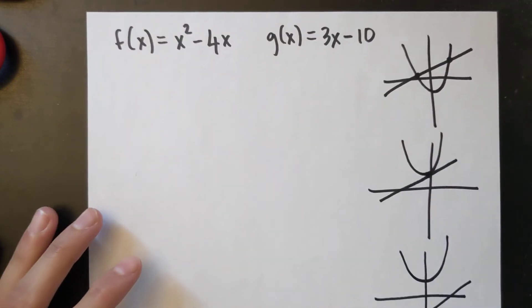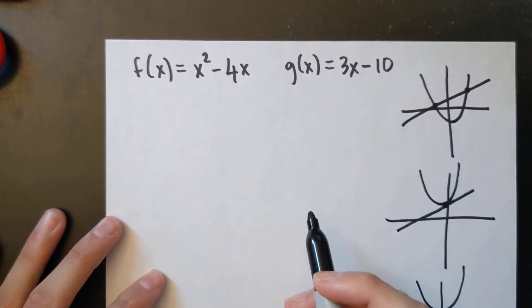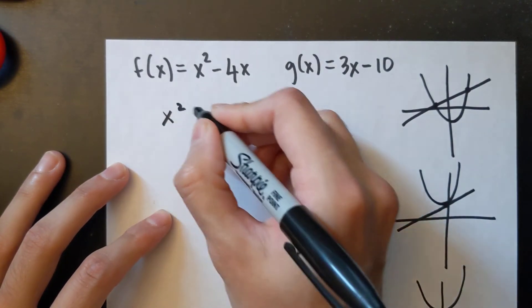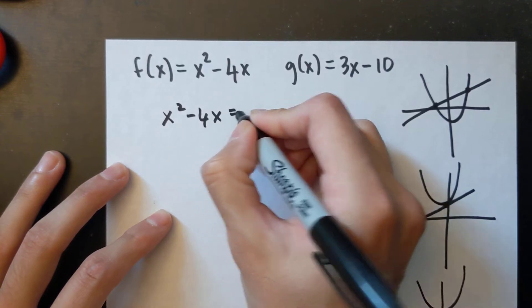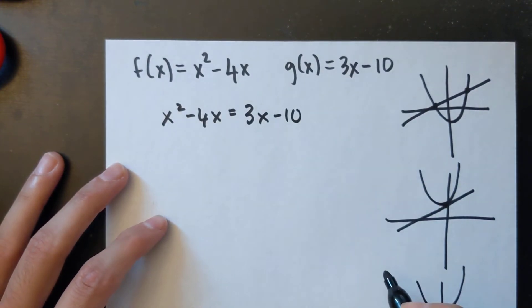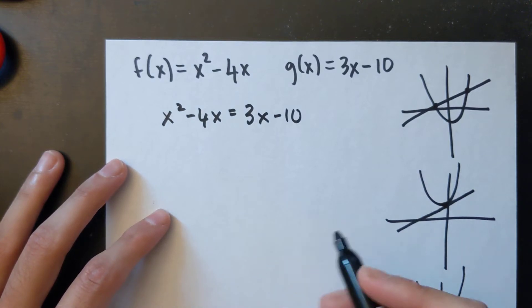Now for all three methods it's the same procedure to follow. You just want to make the first equation equal to the second equation. Then you want to move everything to one side and make it equal to zero.